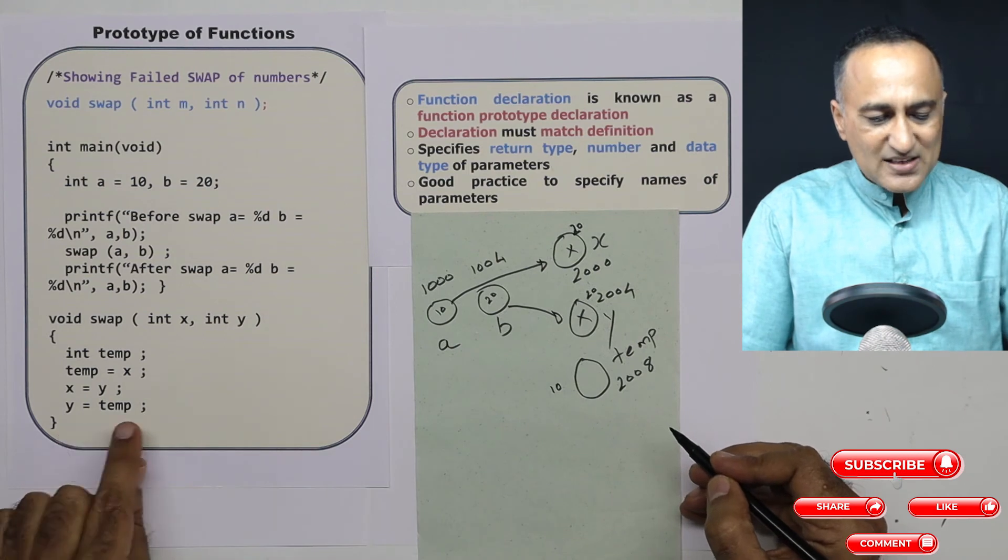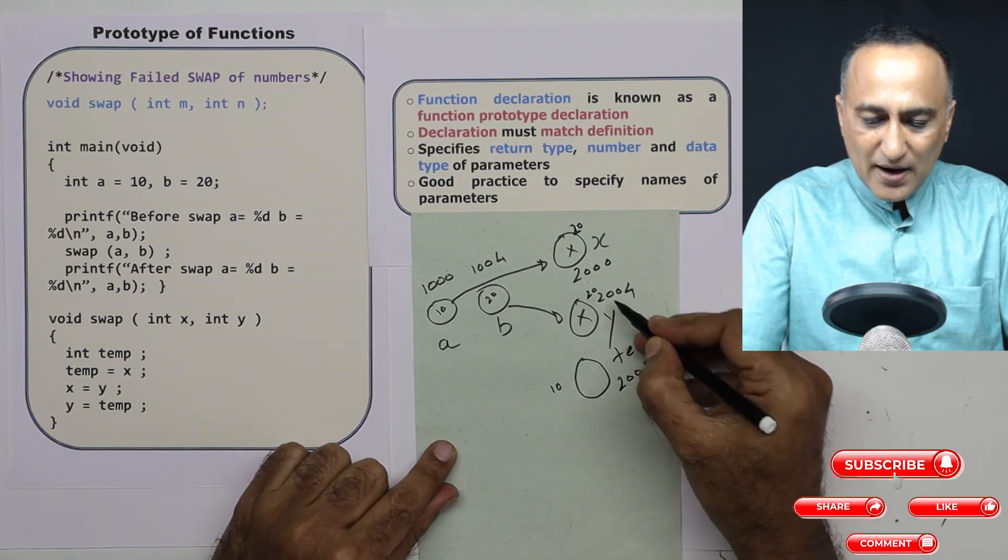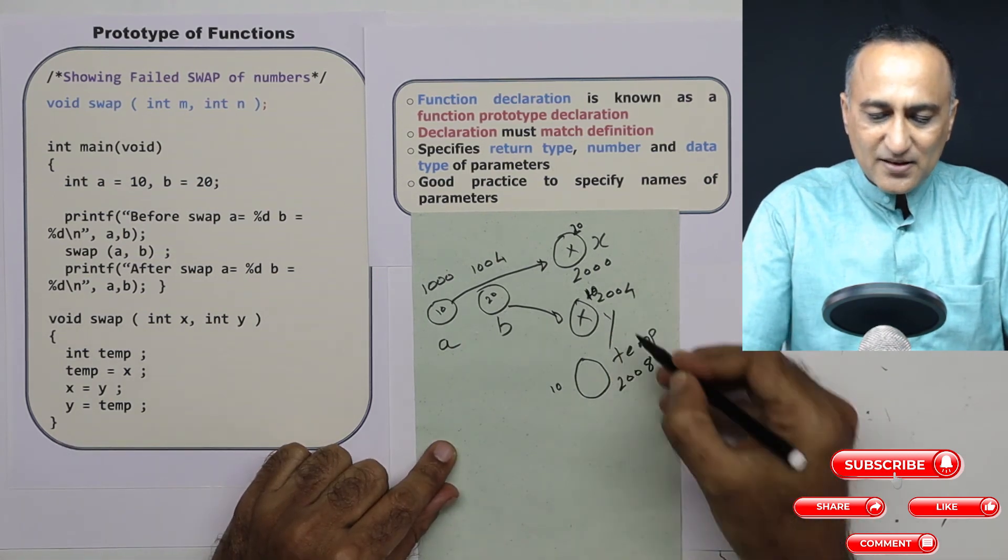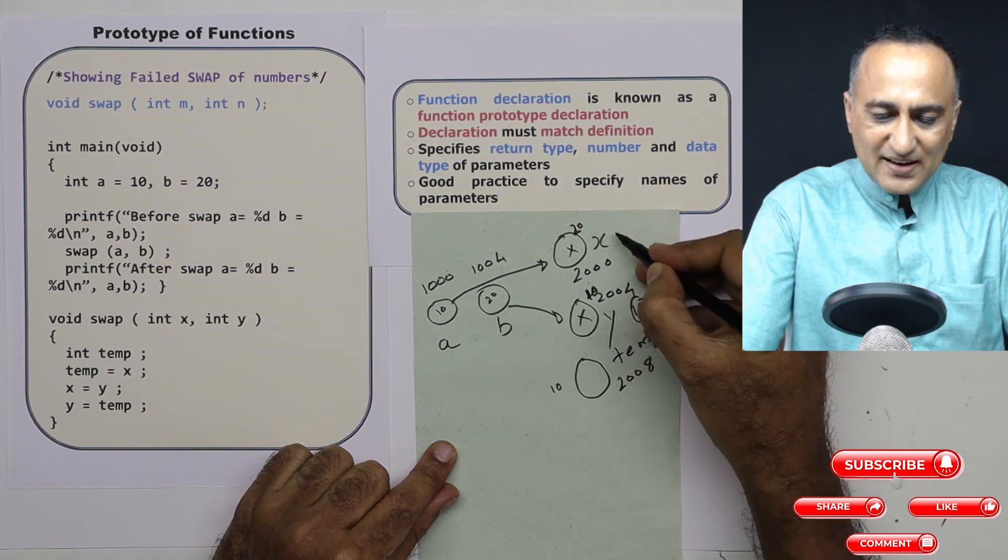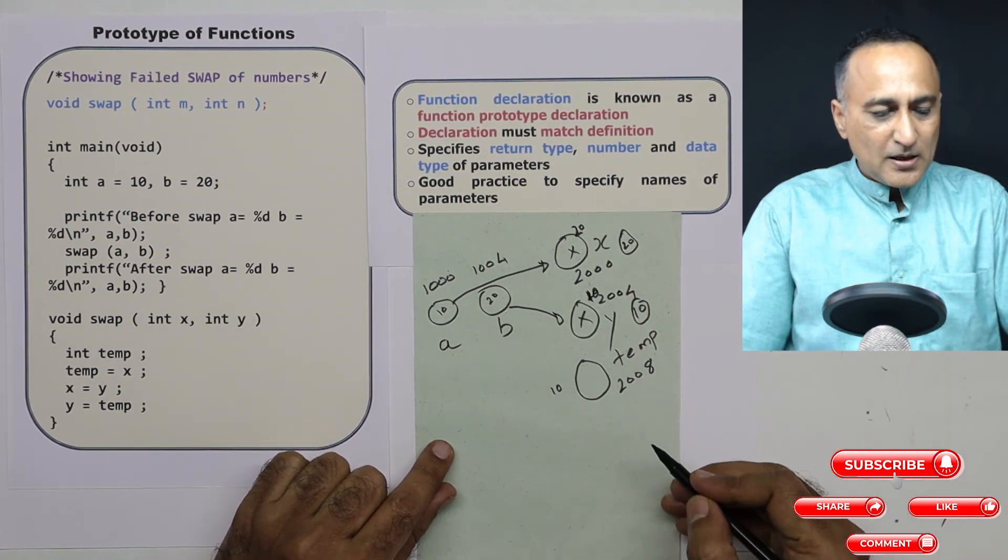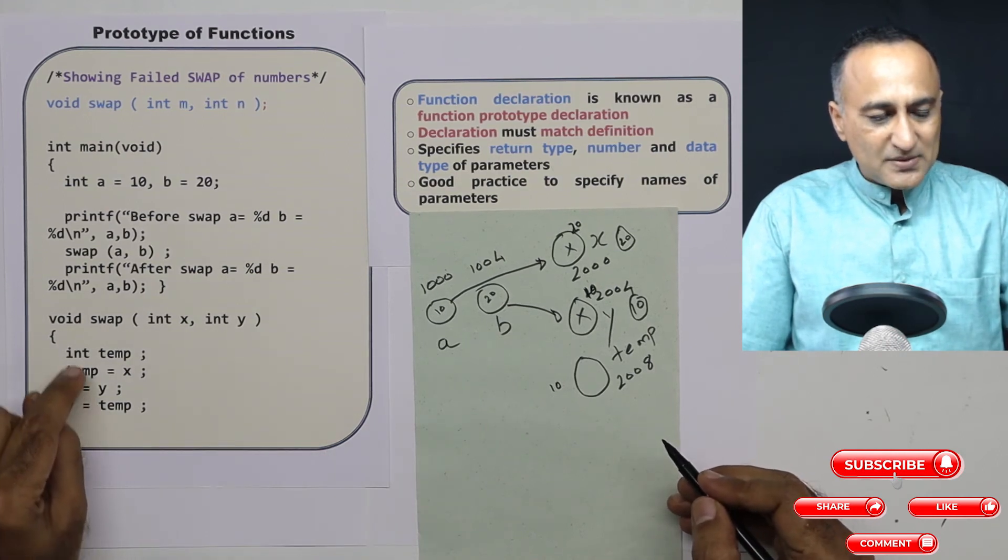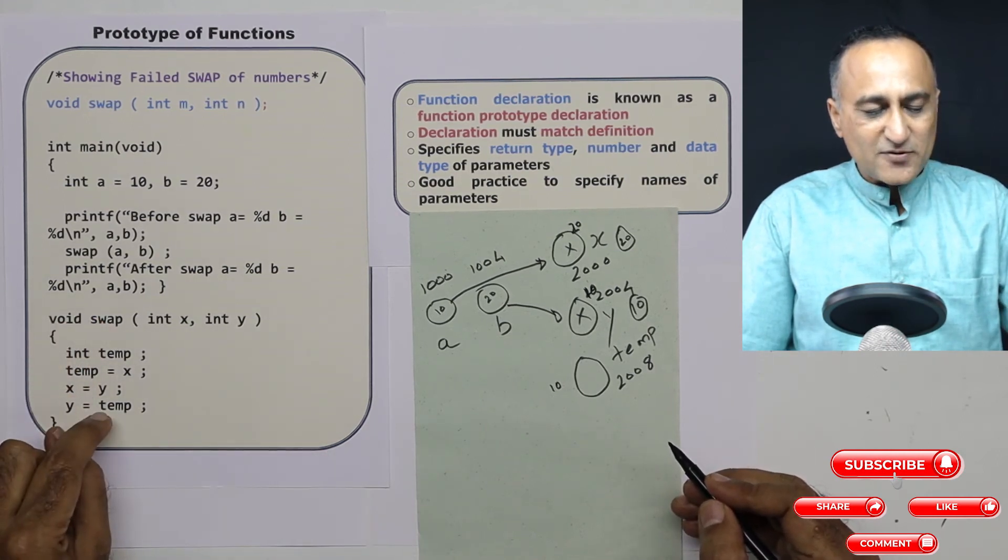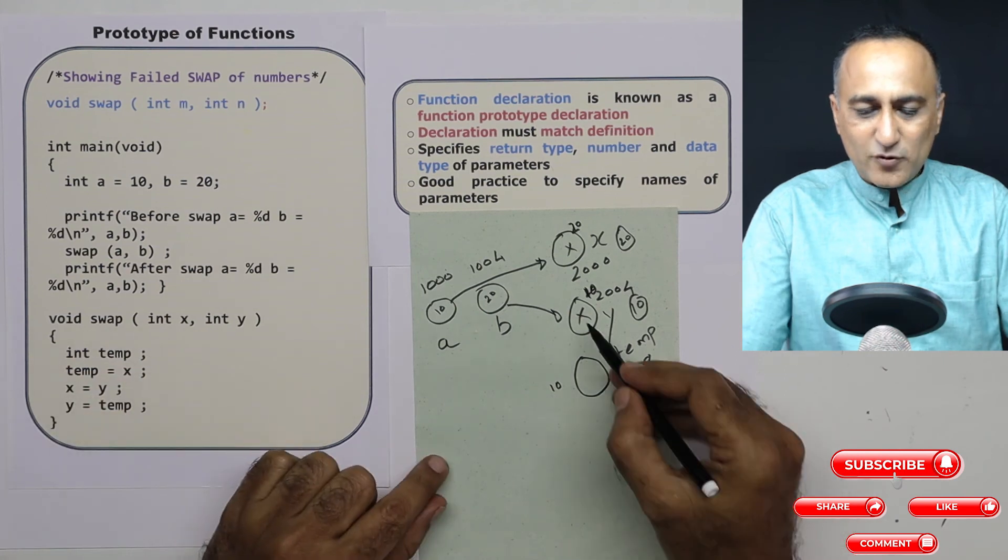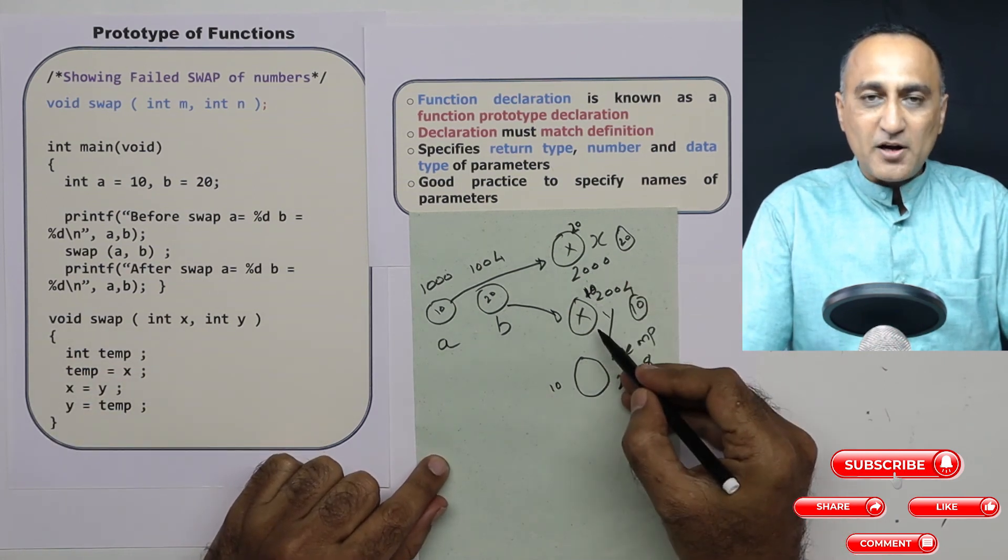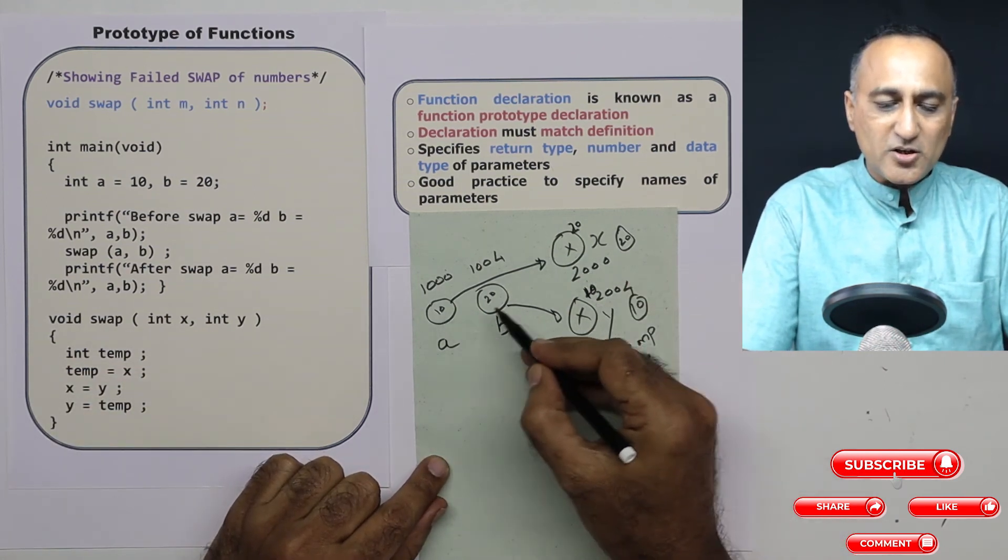Now what I have done is y is taken the value of temp. So I have made it 10. So y is 10, x is 20. But there is a small problem. This exchange has happened only in this function. And these x, y if you see, are two different memory locations which have got no connection to A and B.